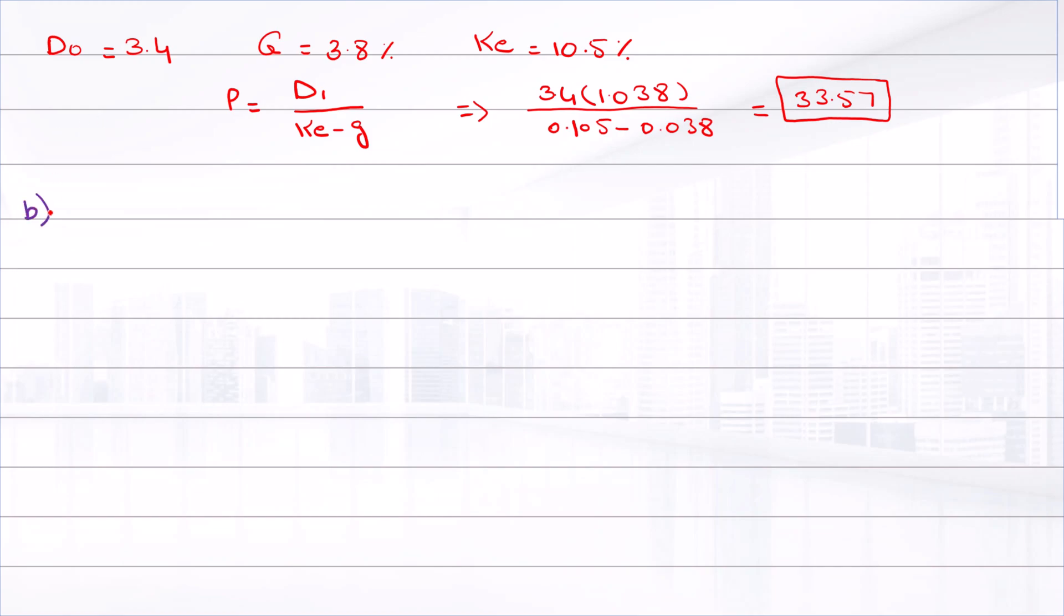For part B, if the company pays quarterly dividends instead of annual dividends, the quarterly dividend will be one-fourth of the annual dividend: quarterly dividend = 3.4(1.038)/4 = $0.8823.